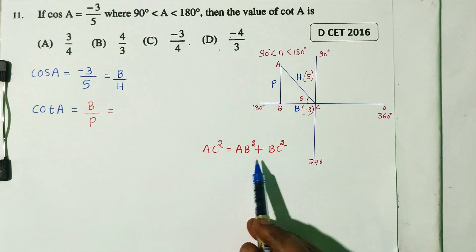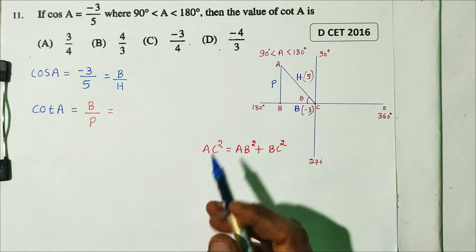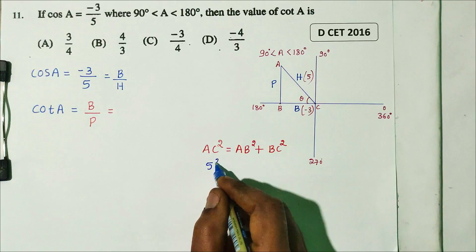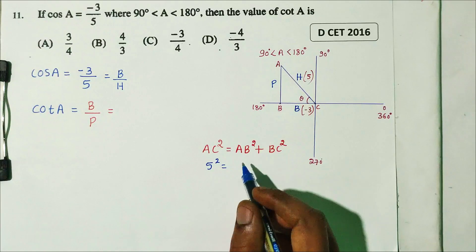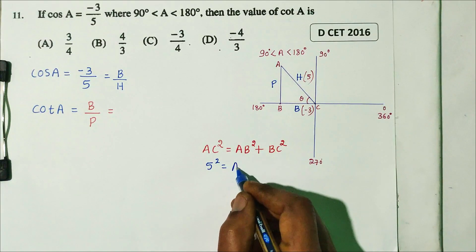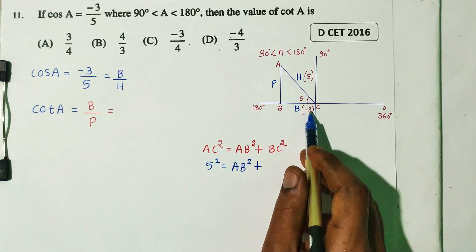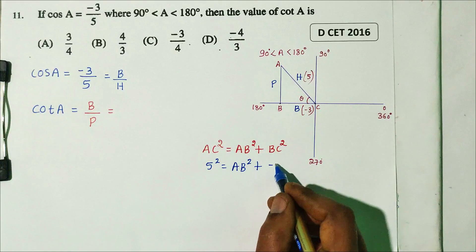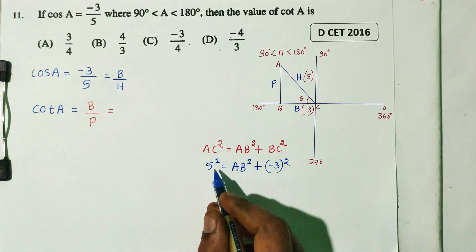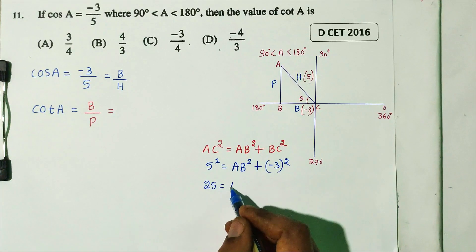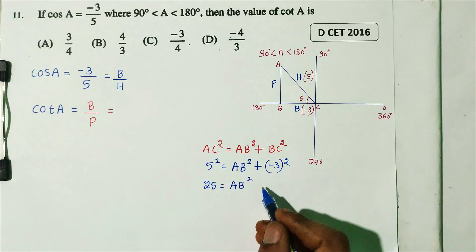cos A equals base divided by hypotenuse. This value equals minus 3 divided by 5. So base is minus 3 and hypotenuse is 5. Now, to find the perpendicular, we apply Pythagoras theorem: AC² = AB² + BC². Substituting: 5² = AB² + (minus 3)².